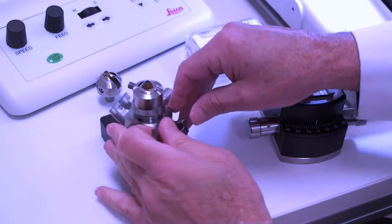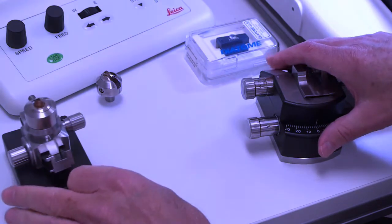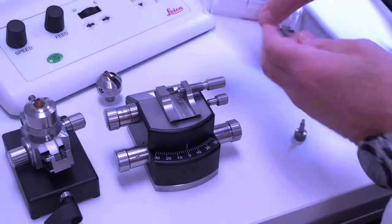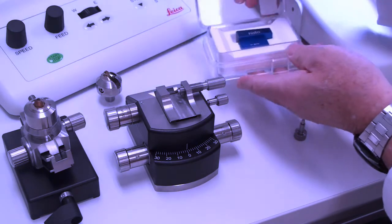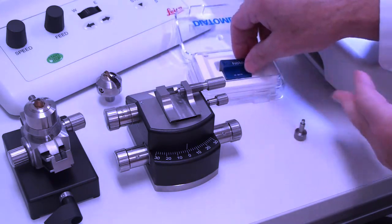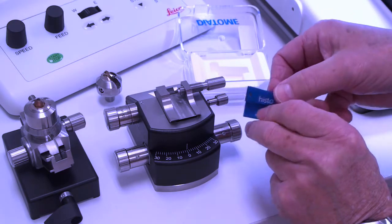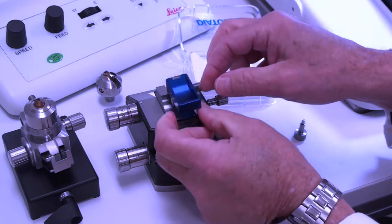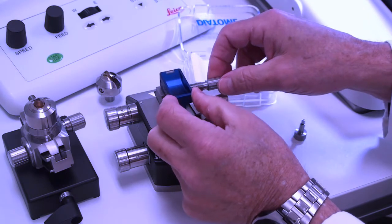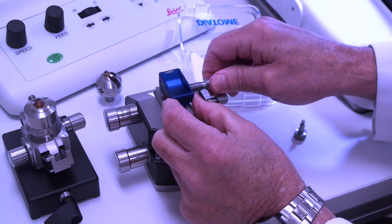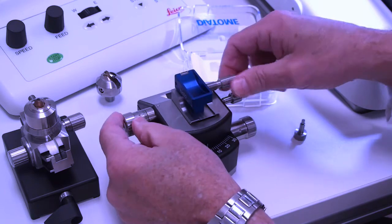So our sample is all ready to go, and now we're going to load our knife. When you handle diamond knives, be sure to never touch the knife itself, the blade. So always be careful and hold it from the sides and the back. As I load that, I want to make sure that goes all the way forward so that it's flush against the front. Again, nice and tight.